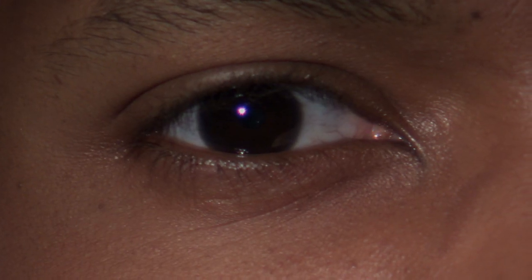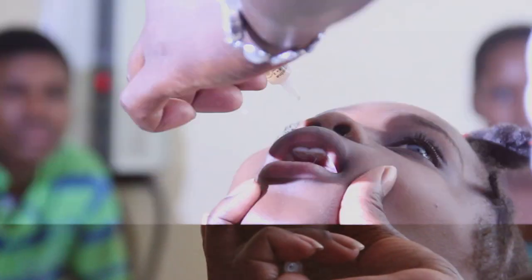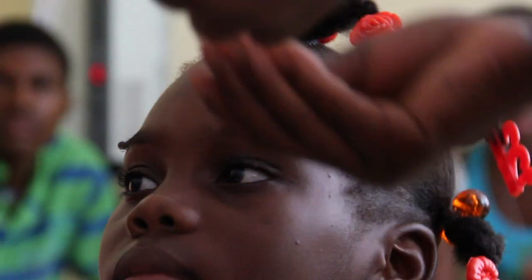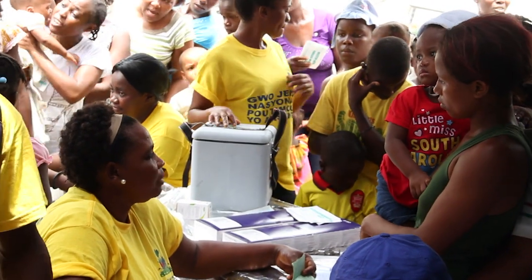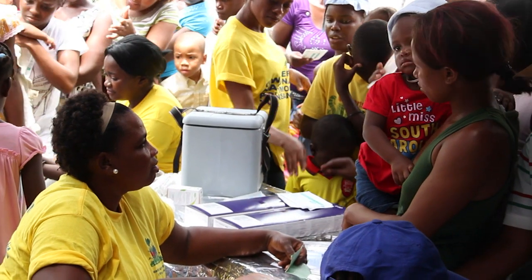But the reality is that there are still 285 million people around the world who are suffering from visual impairment, of which 40 million of them are blind, and 80% of this are preventable.